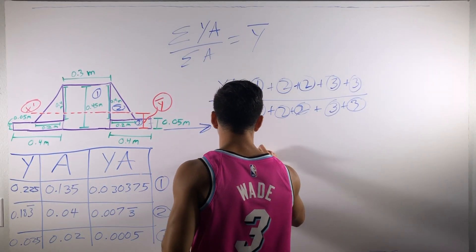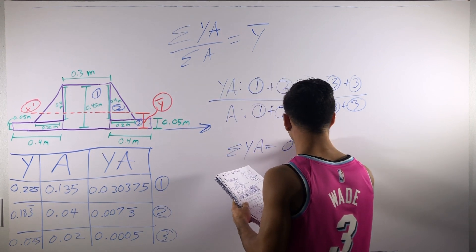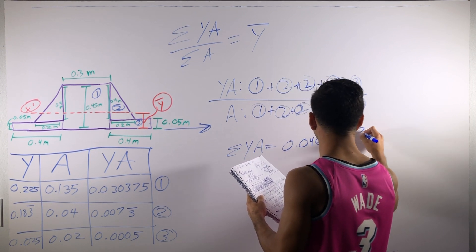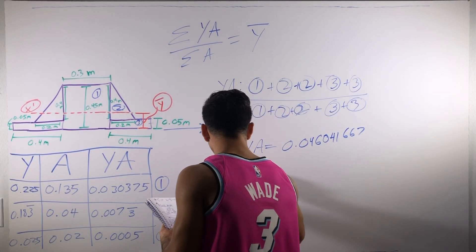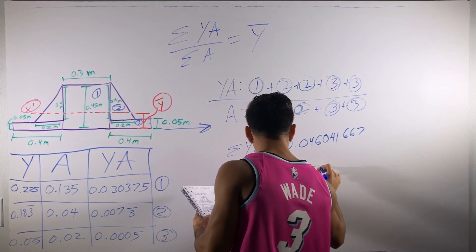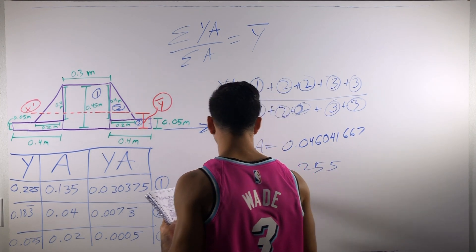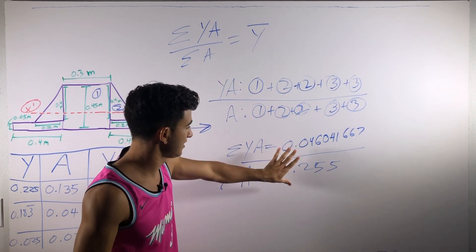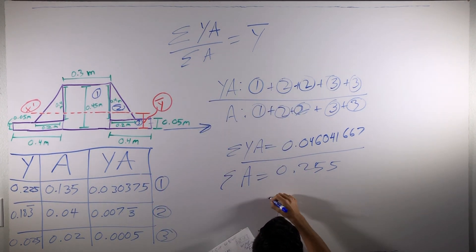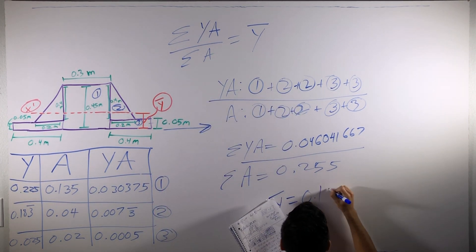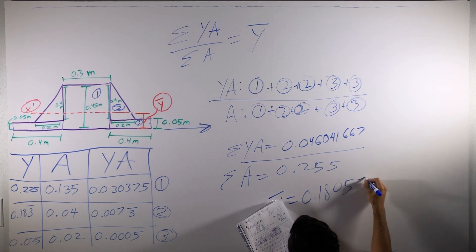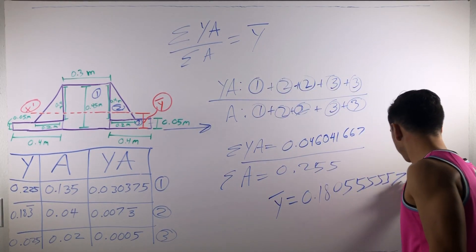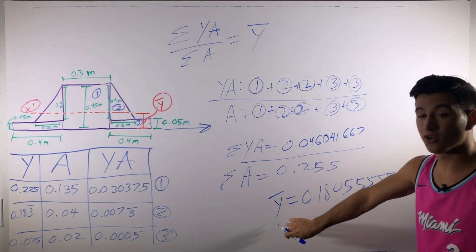The summation of y times A is equal to 0.046041667. The summation of just A is equal to 0.255. Dividing these two numbers gives us y-bar equal to 0.180555557 meters. There is the first part of the problem — finding y-bar.